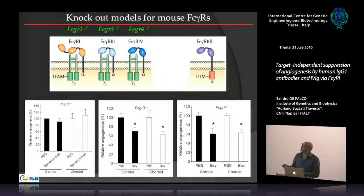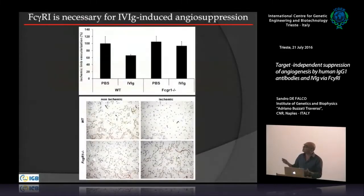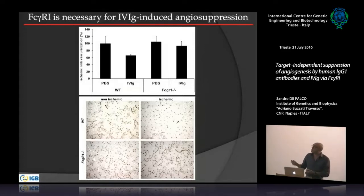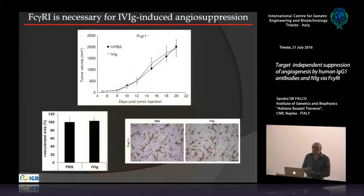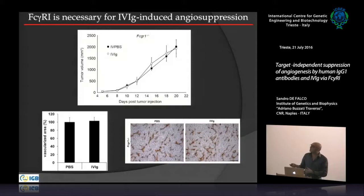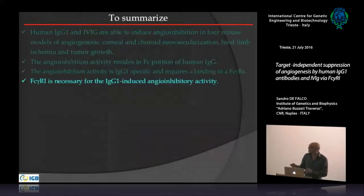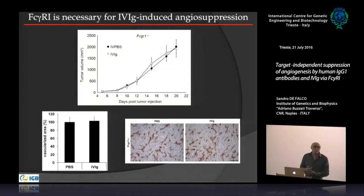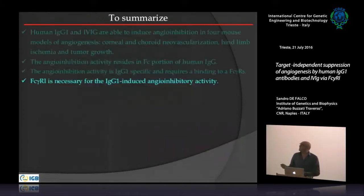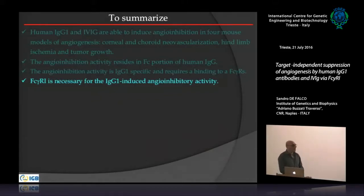In receptor 1 minus/minus mice, we also performed the limb ischemia experiment and lost the ability of IgG1 to inhibit angiogenesis. Using the fibrosarcoma model in C57 mice, we again lost the angio-inhibitory and tumor growth-inhibiting effect. This set of data indicates that receptor 1 is necessary for the activity.